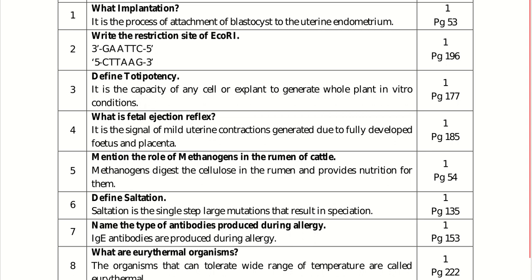Define saltation. Saltation is a single-step large mutation that results in speciation. Name the type of antibodies produced during allergy. IgE antibodies are produced during allergy.